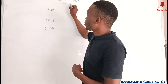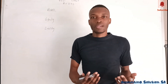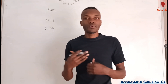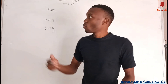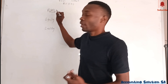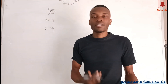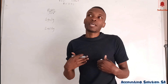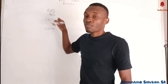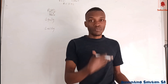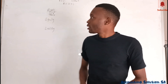Remember the principle: assets equal owner's equity plus liability. Now, when we talk about an asset, we are talking about an item owned by a company or business. For example, a company can own a vehicle, a bank account, or a debtor — if someone purchases on credit from us, that is recorded as our asset.